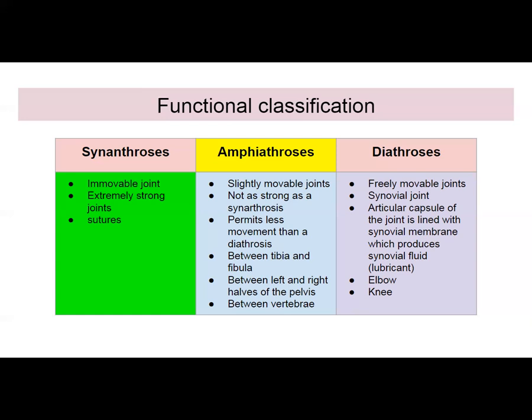Diarthroses are freely movable and are also synovial joints. Because they're synovial joints, the articular capsules are lined with synovial membranes, which produce synovial fluid that serves as a lubricant. Examples of diarthroses are your elbow joint and your knee joint. The colors in your notes should overlap with what we learned in structural classification — just different ways of describing.